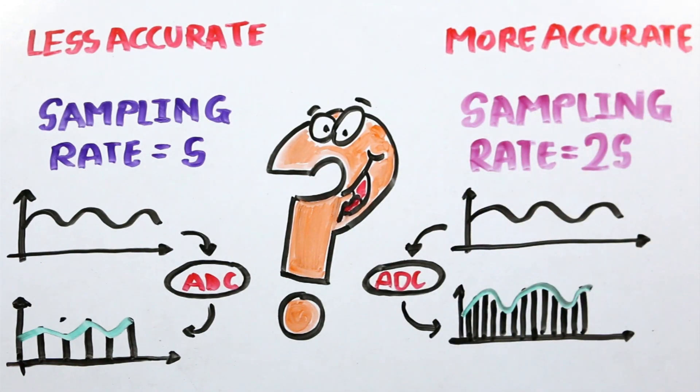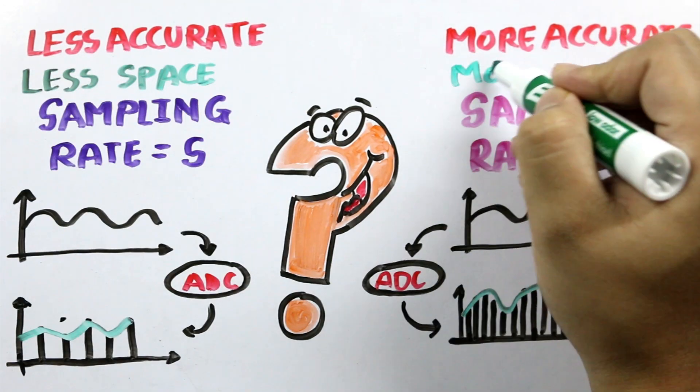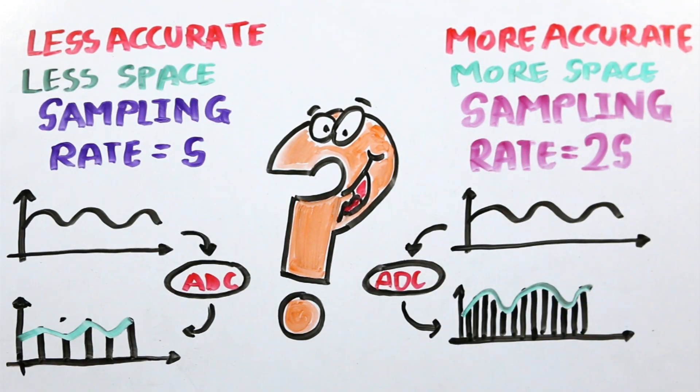The more I increase the sampling rate, the more accurate my digital representation of the sound becomes. But the more digital information I create, the more space I will need to store it.